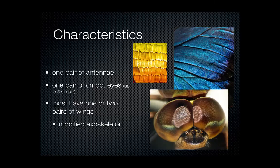Insects tend to have one pair of antennae — not two like some crustaceans, but just one. They have one pair of compound eyes, which are really good for detecting movement but not good at seeing a clear image. They can also have up to three simple eyes, and those are really good at detecting light.